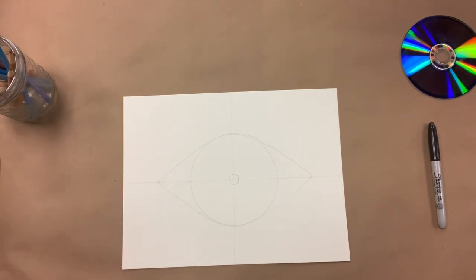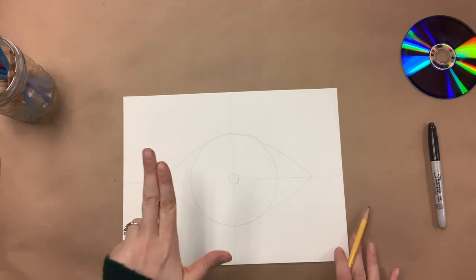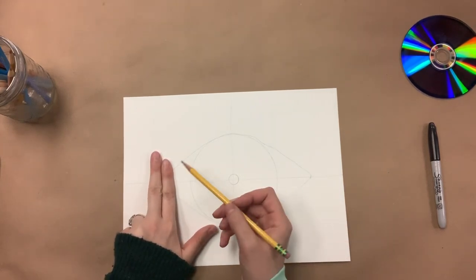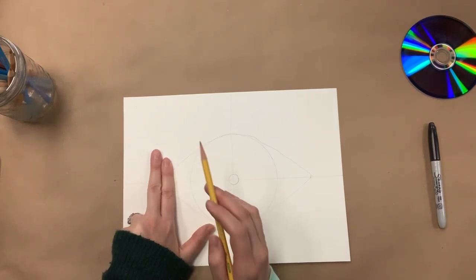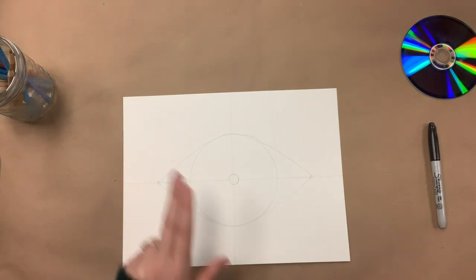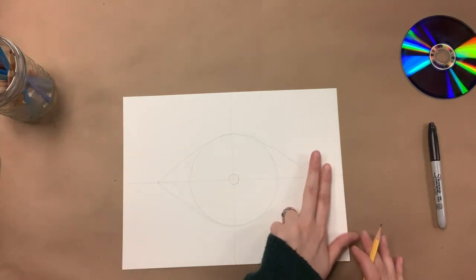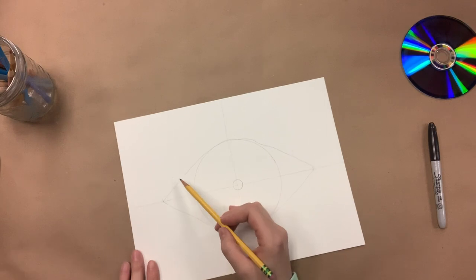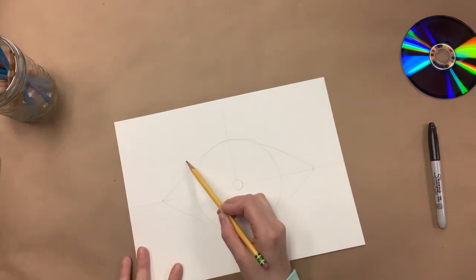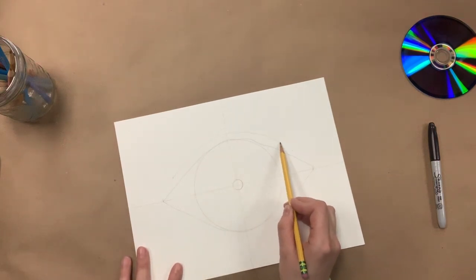The next thing that we have to do is create the crease of our eyelid. We're going to go two fingers in and make a mark about, I would say, half an inch above our line. And you're going to make this very, very light, this dot right there. And we're going to create the crease of our eyelid.